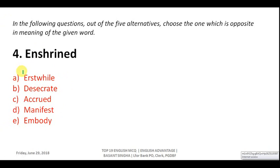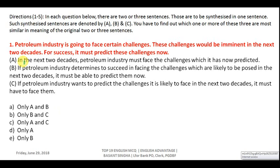Question four: find the opposite of 'enshrined.' This word has been asked in SSC exams multiple times. Enshrined means to make something holy. The opposite is 'desecrate,' which means to disrespect something. Other options like 'erstwhile' (existed in the past), 'accrued' (accumulated), and 'embody' are not correct. The correct answer is desecrate.